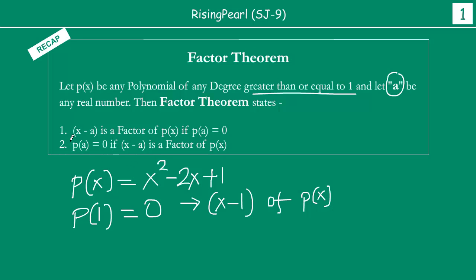And the second point that Factor Theorem tells us is that if you're given that x minus a is a factor of p(x), then what it means is that p(a) must be equal to 0. So if we give you x minus 1 is a factor of this polynomial, then we can say that p(1) must be equal to 0. This is what basically the Factor Theorem is telling us.